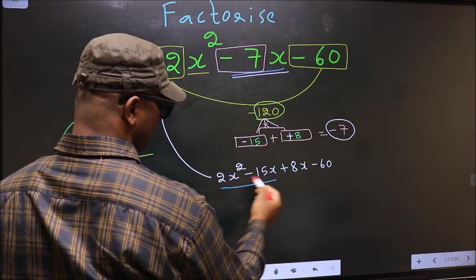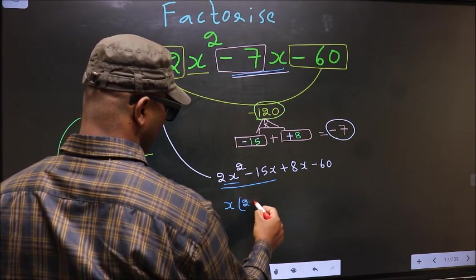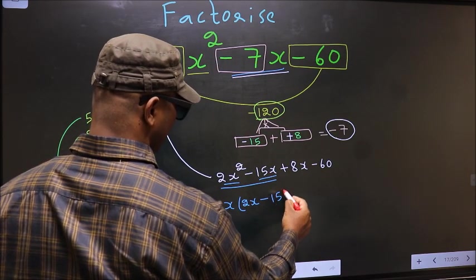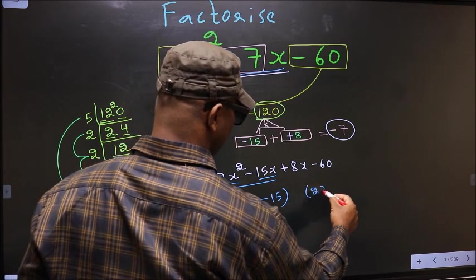From these two terms, what can be taken out in common? x. So here we get x(2x - 15). Now whatever we got here, here also we should get the same thing.